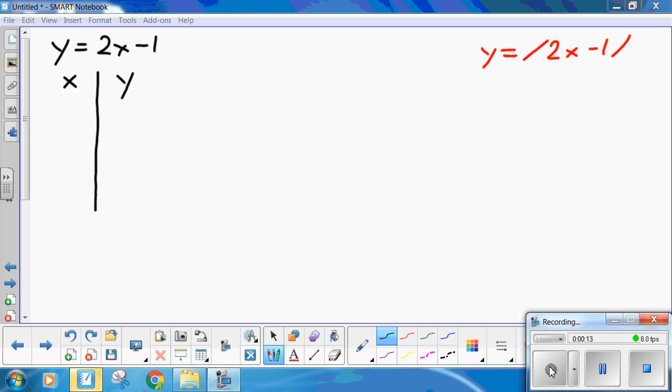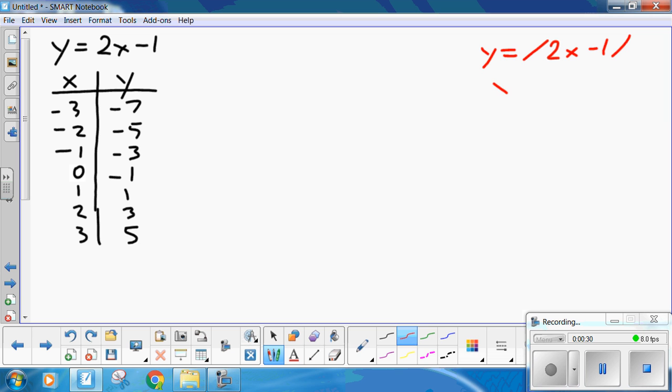The original function, y equals 2x minus 1. Table of values. Now, note I don't normally ask for them. It's just, with absolute value functions, it's much simpler to show. So 7, 5, 3, 1, 1, 3, 5.